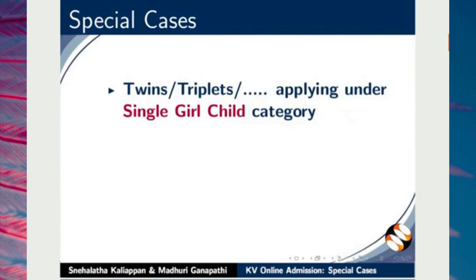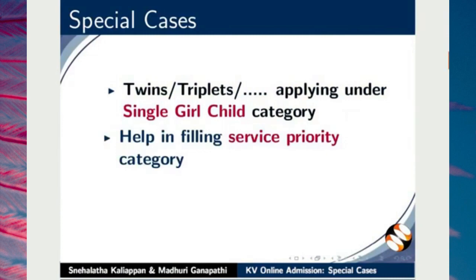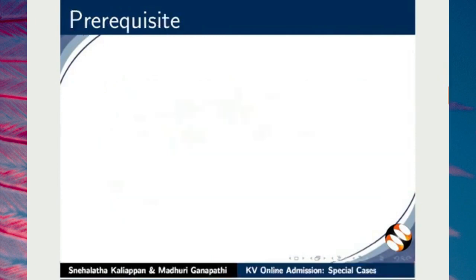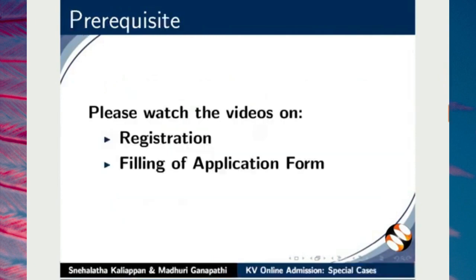Twins, triplets, quadruplets or similar siblings applying under single girl-child category. Help in filling service priority category. Cancelling the already submitted application form. As a prerequisite, please watch the previous videos on registration and filling of application form on KV application portal.